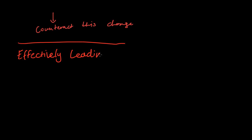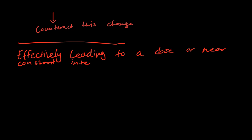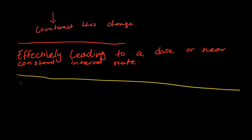The maintenance of a constant internal environment is done through detecting the change and then counteracting to this change. Through detecting the stimuli and counteracting to the change, it effectively leads to a close or near-constant internal state.